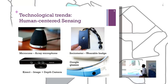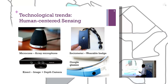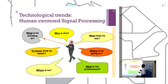What is new is that, thanks to human-centered sensing and machine learning technologies — signal processing and machine learning — it is possible to observe humans in a very non-intrusive way, using array microphones, wearable devices, Kinect depth cameras, or film glasses. One can then pose human-centered signal processing problems.